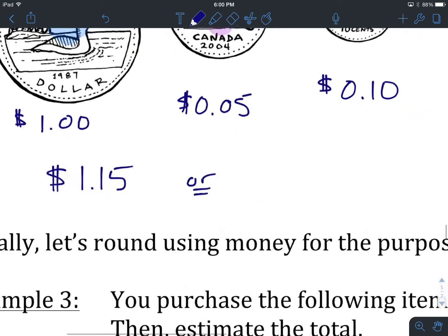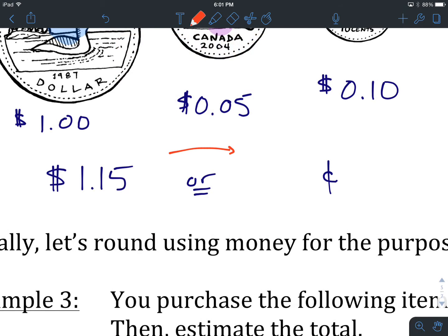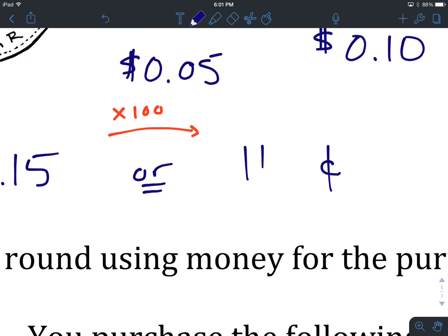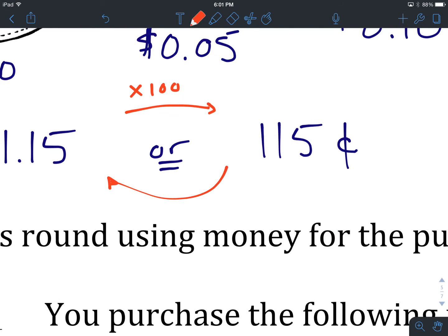We are also given an opportunity to write this in cents. How do we change from dollars to cents? If we are going from dollars to cents, we multiply by one hundred. If I take 1.15 and multiply it by one hundred, I get 115 cents. If going from cents to dollars, I would be dividing by one hundred.